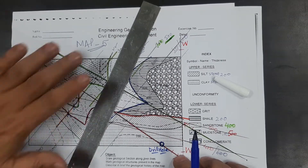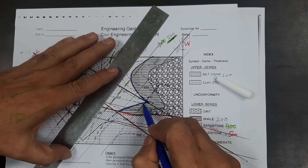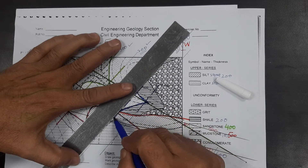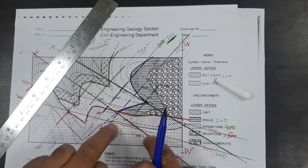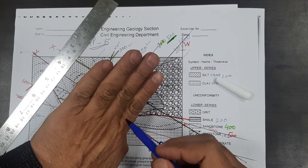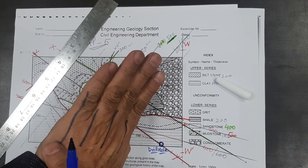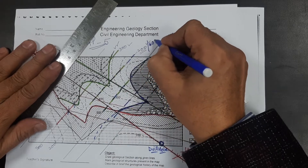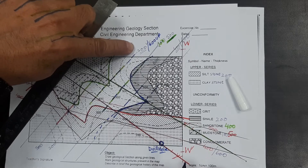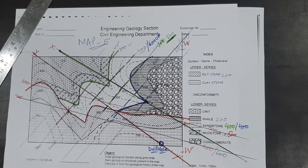We can also go in reverse order. The upper contact of sandstone has values of 300, 400, and 500 along the section — projecting further, it will be at 600 meters at a given point. The lower contact is already at 200 meters at that location. The difference is 400 meters, confirming the thickness of sandstone is 400 meters. You can work out from upper to lower contact or from lower to upper contact.